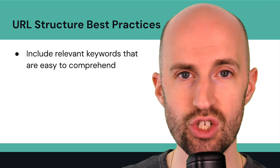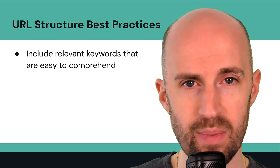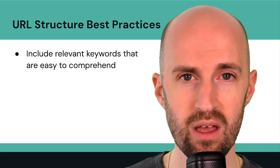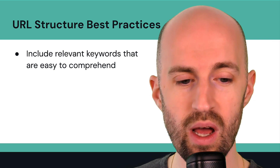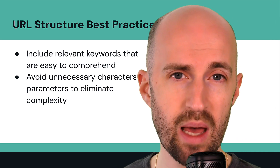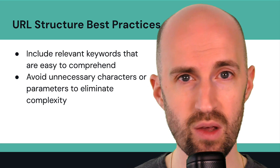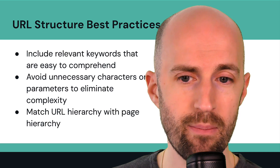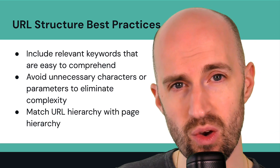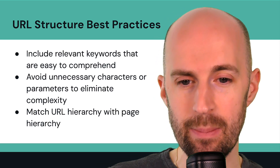Let's talk about some best practices when building your URL structures. First, include relevant keywords that are easy to comprehend and relevant to the content on the page — don't just force a keyword you want to rank for; make sure the main topic is reflected in the URL. You also want to avoid unnecessary characters or parameters to eliminate complexity, just like that Bloomberg example which was completely unreadable. Match the URL hierarchy with the page hierarchy — if a page is nested under a subcategory, the URL should show category/subcategory/page-slug.